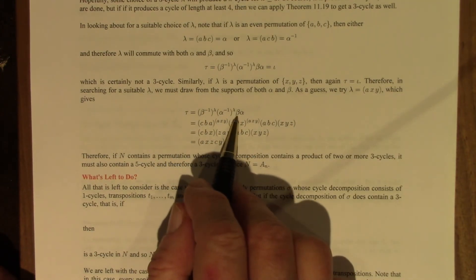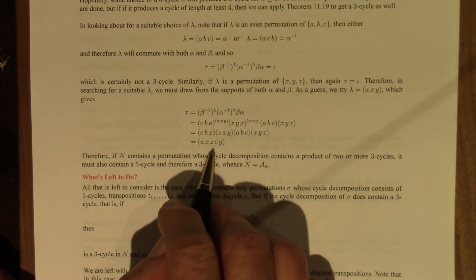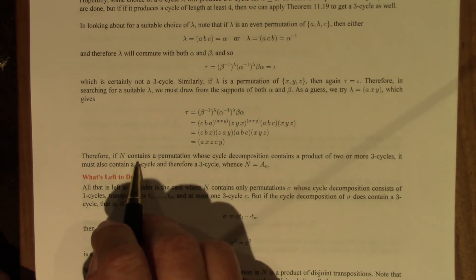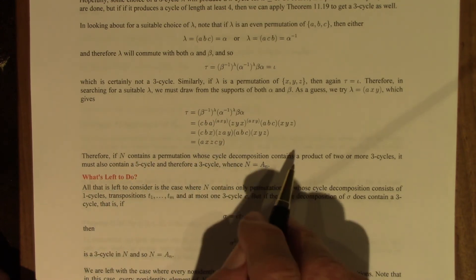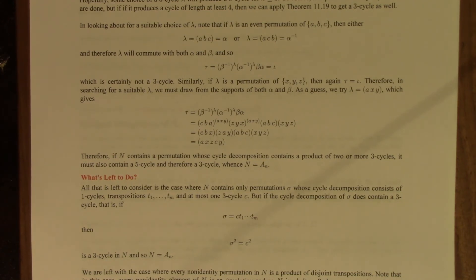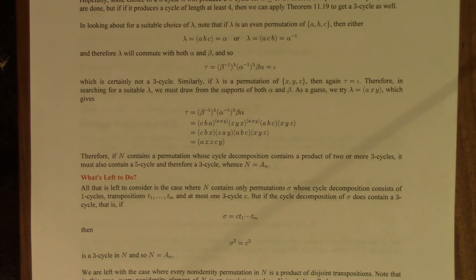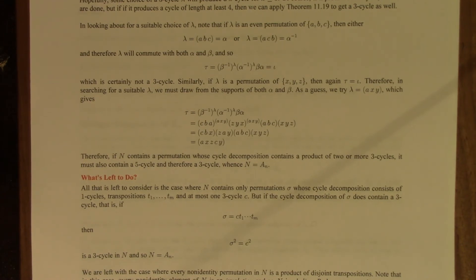This tells us that in looking for a 3-cycle lambda, we'd better grab something from the supports of both alpha and beta. Let's try (a, x, y) — taking two elements from one of alpha or beta and one from the other. By symmetry, this is really the only shot we have. When we do this conjugation, lo and behold, we get a 5-cycle. That's all we need. N now contains a permutation with a 5-cycle in its cycle decomposition, and therefore a 3-cycle by the previous theorem. If N contains a permutation whose cycle decomposition contains a product of two or more 3-cycles, it will contain a 5-cycle and therefore a 3-cycle — so again N will be A_n.